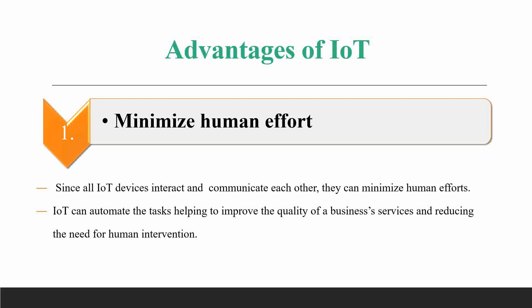IoT can also automate tasks, helping to improve the quality of business services and reducing the need for human intervention. With the help of smart devices, each and every device can perform every kind of activity through interaction and communication, so there is no need for human intervention.